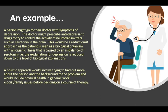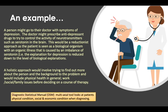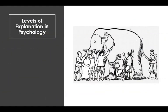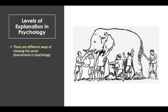A holistic approach is more about finding out exactly what is going on. The Diagnostic and Statistical Manual is a multi-axial tool that looks at a patient's physical condition, social and economic condition when diagnosing — so it's quite holistic in that sense. Within reductionism and holism, there are levels of explanation in psychology — different ways of viewing the same phenomena, as we just saw in our example.